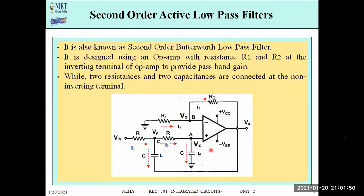When we do this analysis, we will calculate the transfer function, and remember that the transfer function is always calculated in terms of the Laplace transform. For the capacitor, the Laplace domain impedance is 1/(SC), where S represents the Laplace variable. Similarly, Vin becomes Vin(S) and V0 becomes V0(S). This circuit is also known as the second order Butterworth low pass filter.